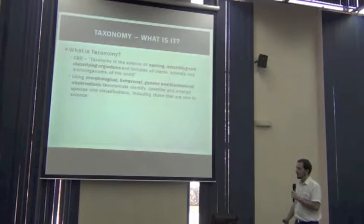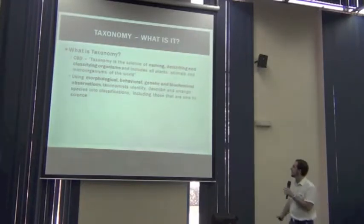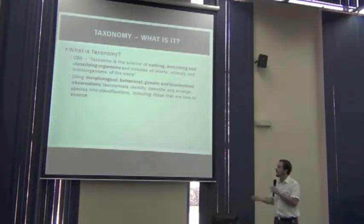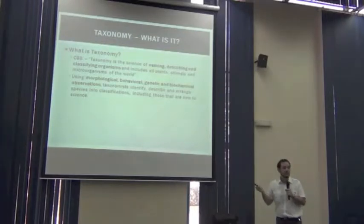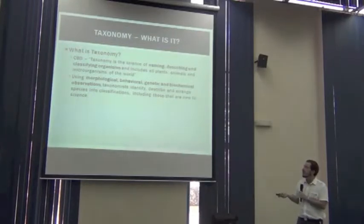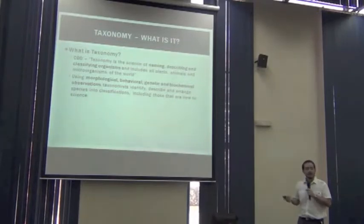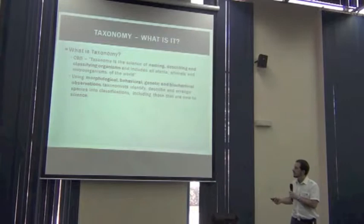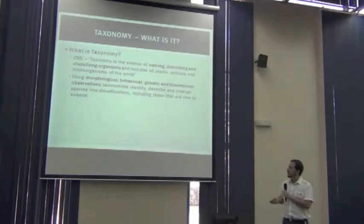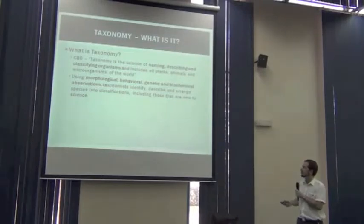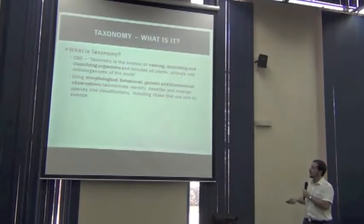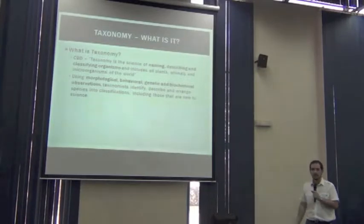Taxonomy itself is a science that, specifically according to the Convention on Biological Diversity, is the science of naming, describing and classifying organisms. It includes all living beings, and it does so by using morphological, behavioral, genetic, and biochemical observations, by which taxonomists identify, describe, and arrange species into classifications.